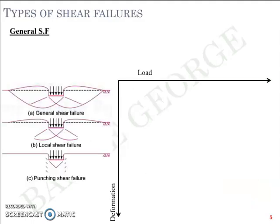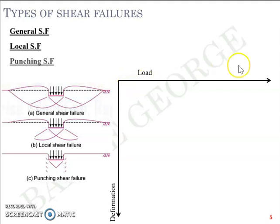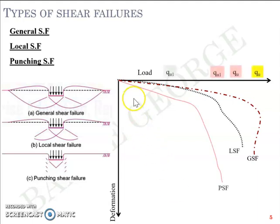In general, there are three different types of shear failures: general shear failure (GSF), local shear failure (LSF), and punching shear failure (PSF). Schematic pictures are shown for each type. When plotting a graph of load versus settlement, general shear failure shows a distinct peak, while local shear failure and punching shear failure show different patterns. The terms Q_U and Q_U1 are marked on the figures, and each will be discussed in detail.